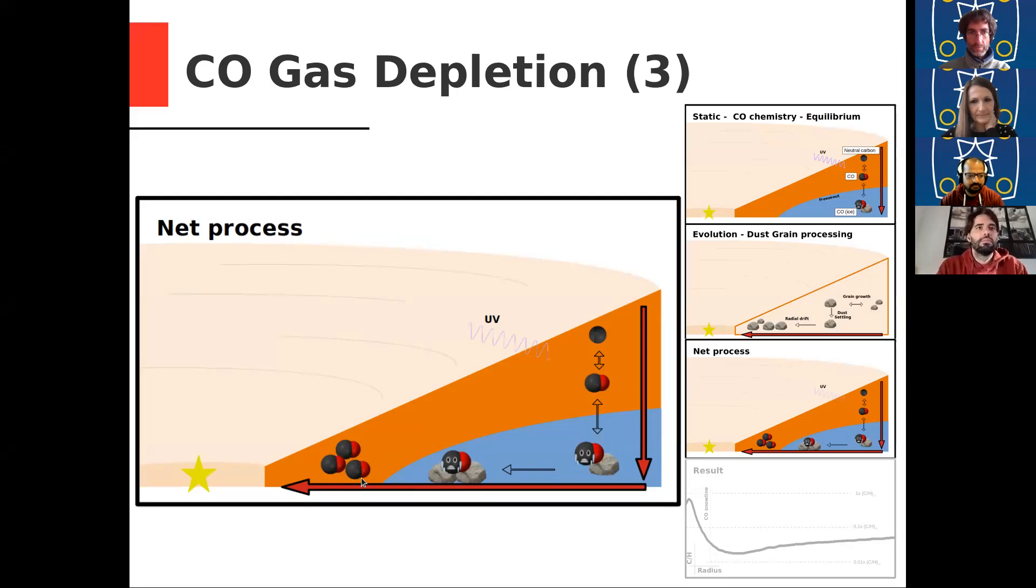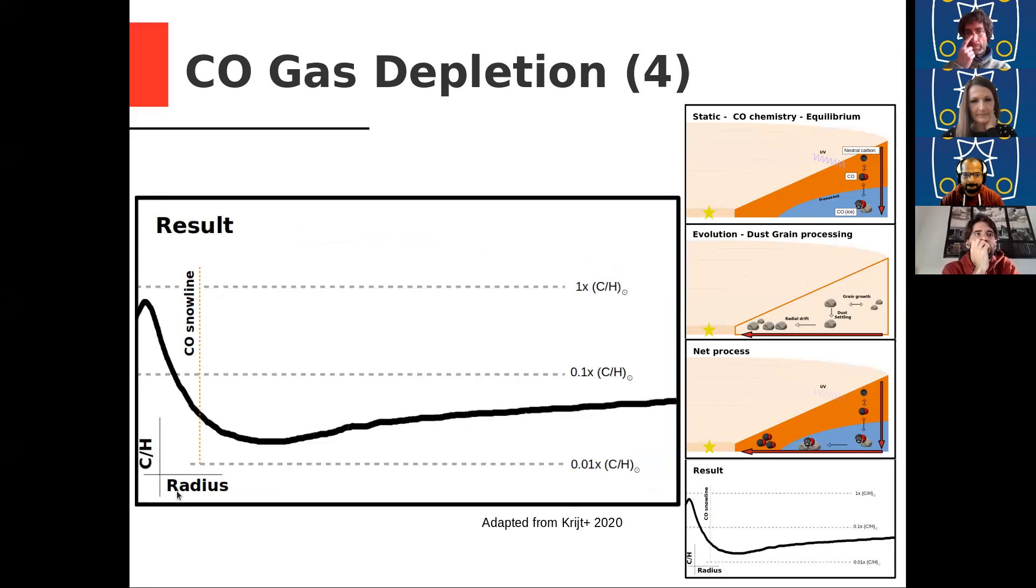And this basically means that you cycle all your carbon through the midplane and remove it from the gas. And it becomes ice on the grains. And eventually, it ends up in the inner disk where it will sublimate again because the temperatures are getting warmer. And you will end up with something like this. Here I plot the carbon abundance as function of radius. So in the outer disk, we expect a depletion by a factor of 10 or even 100. And in the inner disk, we expect more CO because it is released from the grains.